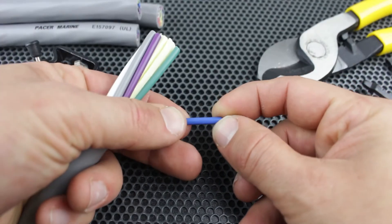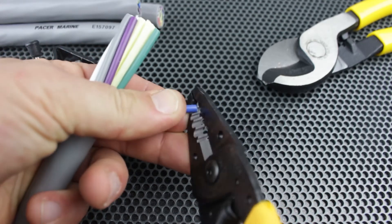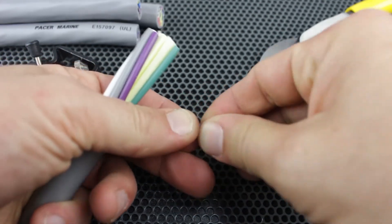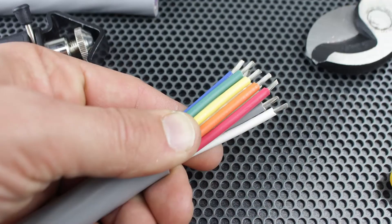After figuring the correct amount of insulation to strip, we'll use our strippers to cut the insulation while pulling it away from the main section which exposes the internal conductors. All that's left is to repeat the process on the remaining wires. And that's it!